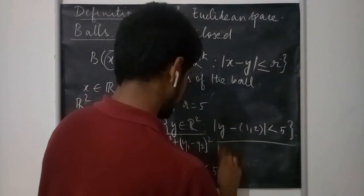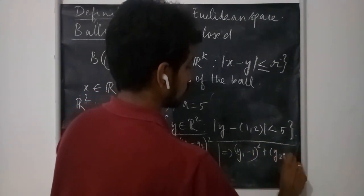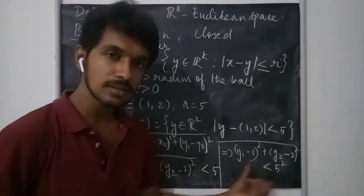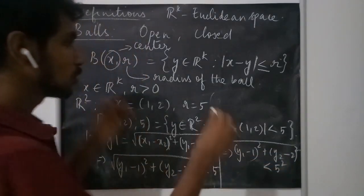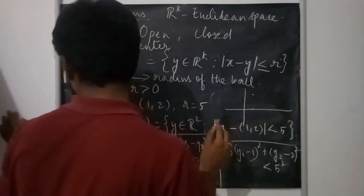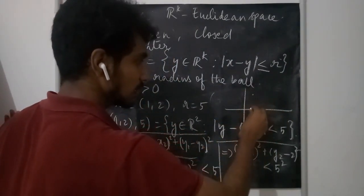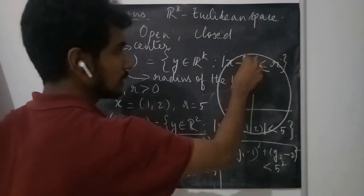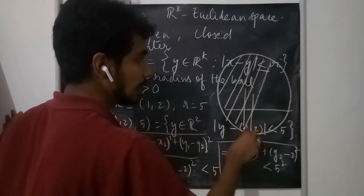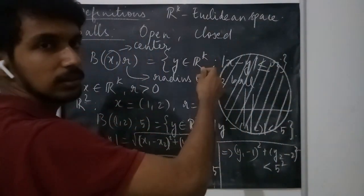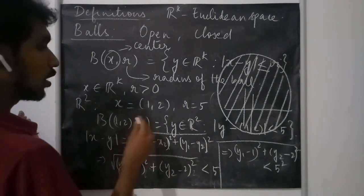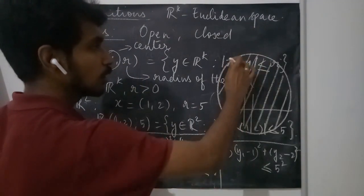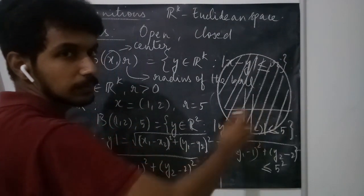Squaring both sides gives (y1 - 1)² + (y2 - 2)² < 25. This is the equation of a circle with center (1, 2) and radius 5. Drawing the diagram, we get a circle, and the open ball consists of all interior points — not the points on the circle itself. If we include the boundary points as well, that gives us the closed ball.